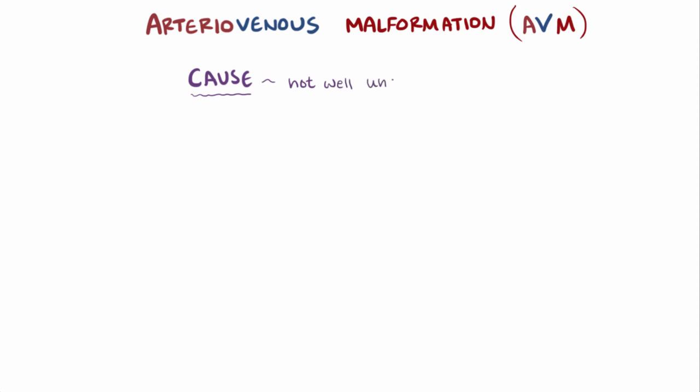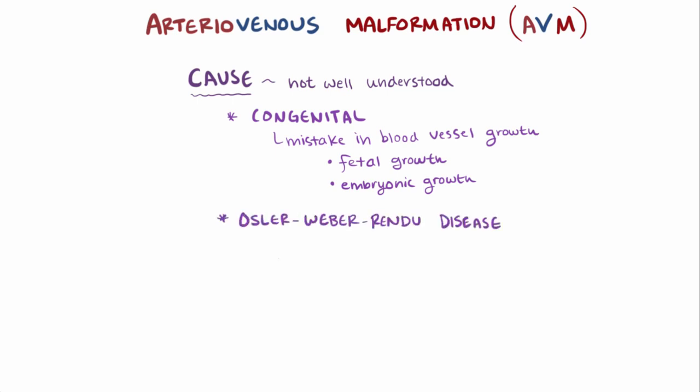The cause of AVMs isn't well understood, although it's thought to be congenital and caused by some mistake in blood vessel growth during embryonic or fetal development, some of which seems to be genetic. One well-known relationship is with Osler-Weber-Rendu disease, which is an autosomal dominant disorder that causes problems with blood vessels throughout the body.